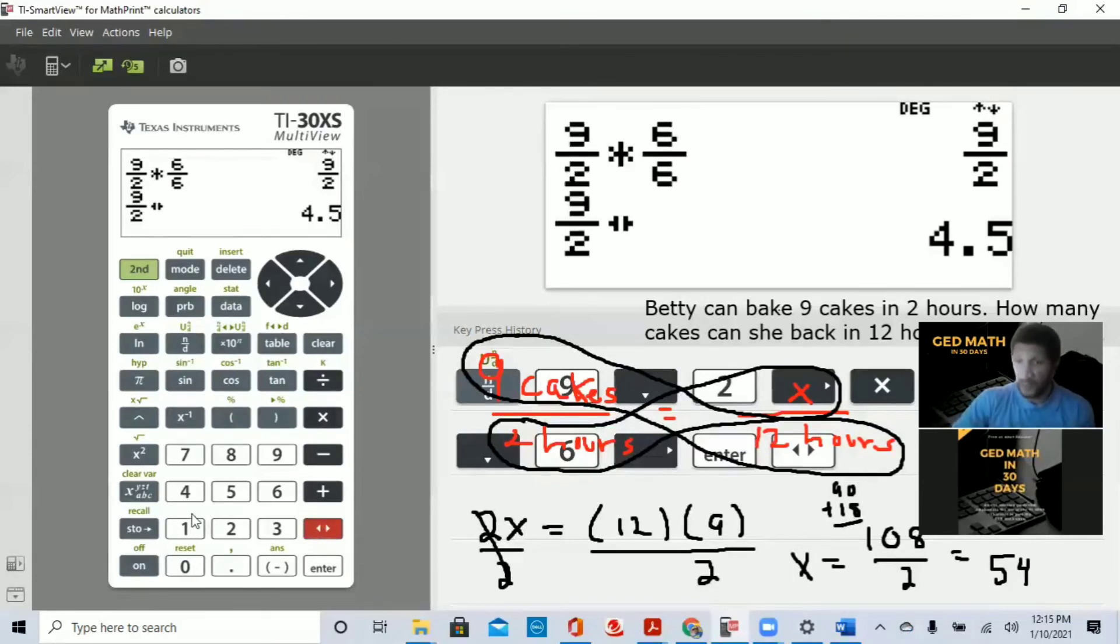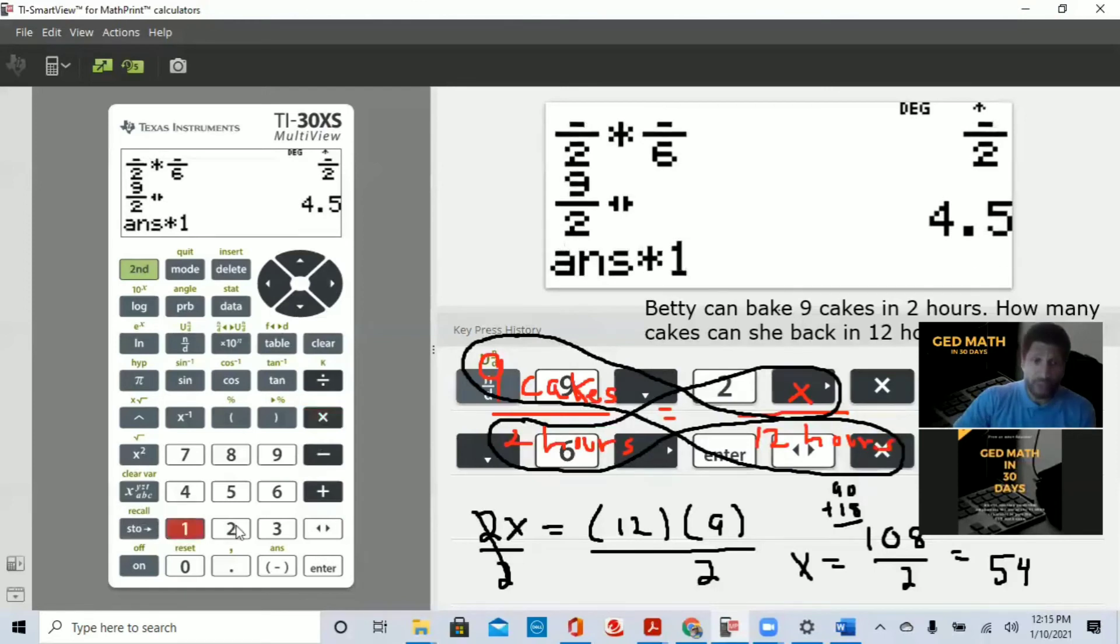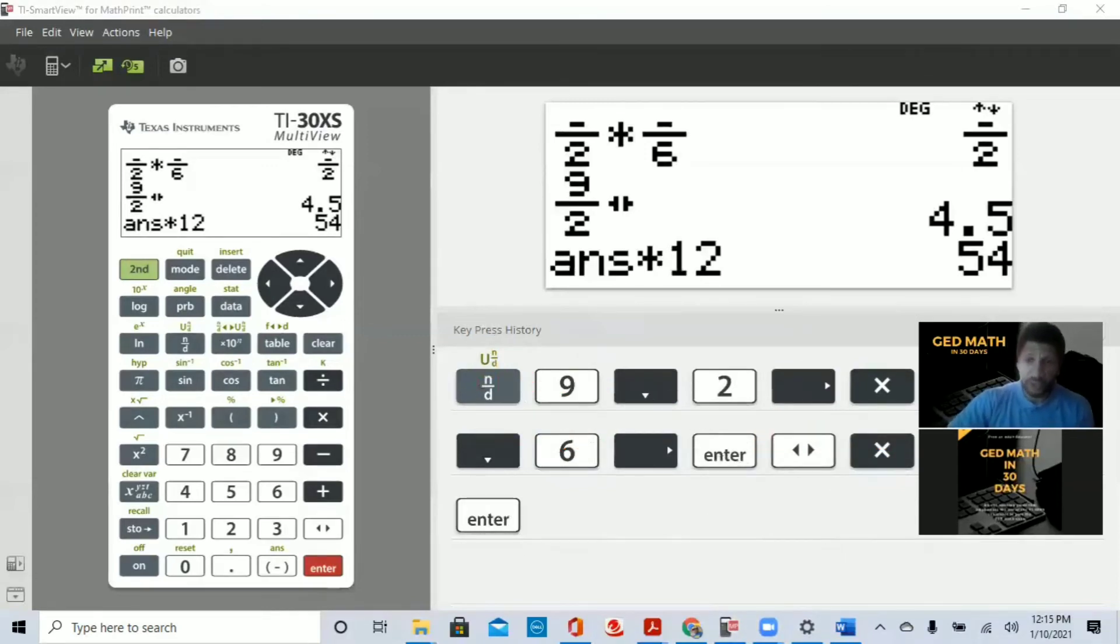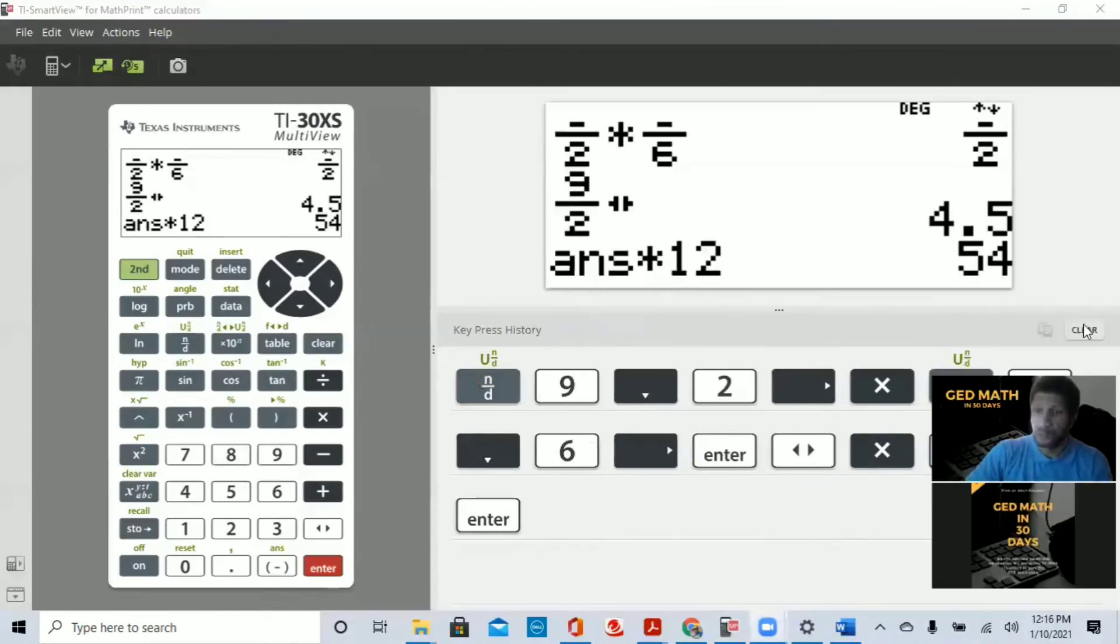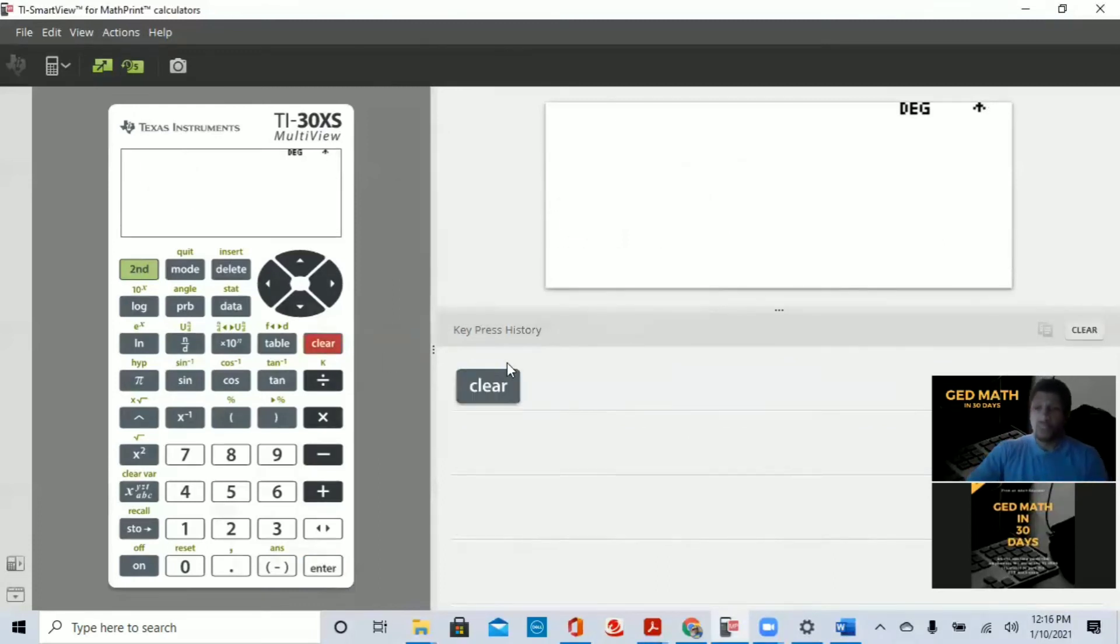So 4.5 is our unit rate. We're going to multiply that by 12 because 4.5 for each hour, but we need to know how many in 12 hours. There we go. Now, let me erase the screen so we can see what we pressed in order to get that problem. So again, we have 54. Let me clear the screen again.